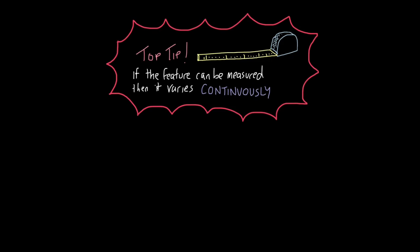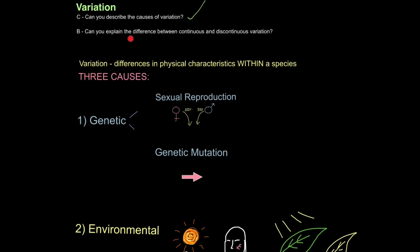If they can't be measured, not with a ruler or a weighing scale, then they are discontinuous. And that's how you can explain the difference between continuous and discontinuous variation.